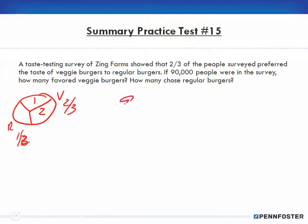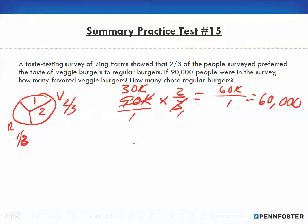If 90,000 people were in the survey, how many favored veggie burgers and how many chose regular burgers? Well, we want to figure out veggie burgers, so we multiply by two-thirds and reduce: 3 in the 90,000 goes 30,000 times, and we multiply 30,000 times 2, so we get 60,000. Whole numbers are over 1, so we end up with 60,000 like veggie burgers.